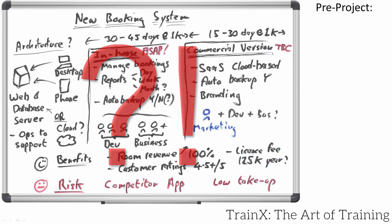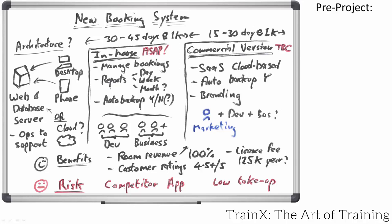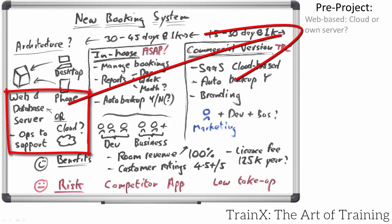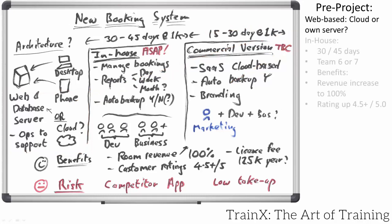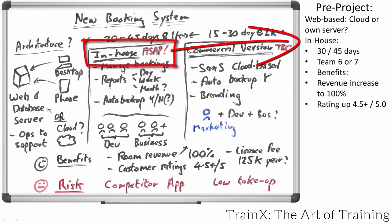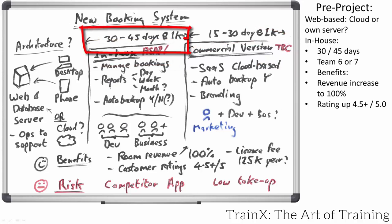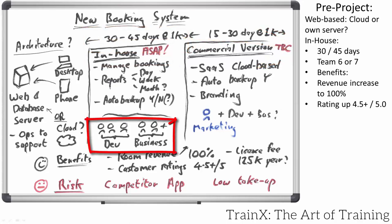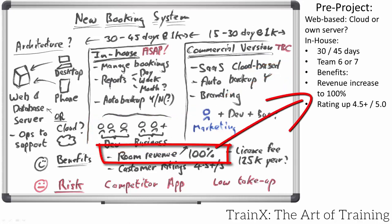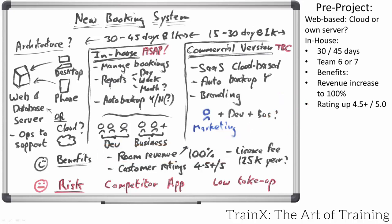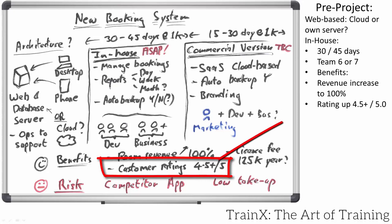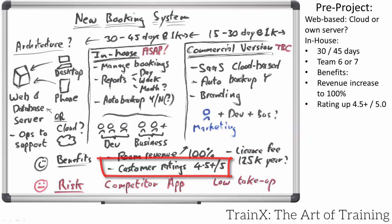Whiteboards are incredibly useful for capturing and organising discussion output. They wish to use desktop and phone-based browsers for their in-house team to manage bookings. They are not sure whether to use their own server or a cloud-based one — this will be investigated further. The CEO wants an in-house solution as soon as possible. Business and technology staff think it will take at least a month with the input of six or so people to develop the database, web pages and reports. The goal is to attain 100% of potential room hire revenue; currently they assess they are losing 50%.